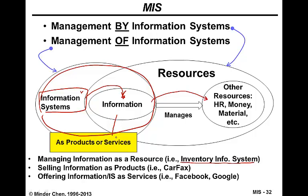A step further, information can be sold or offered as a product or as services. Carfax is an example of an information product. Facebook and Google are examples of providing information or information systems as services. Management by information system means that managers rely on information systems and information to perform their management functions. The information and the information system itself also need to be managed. In this course, we'll learn how to use information to perform the management function and also how to manage information systems, including their development and operation.